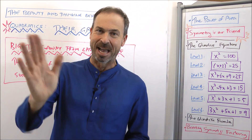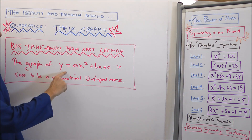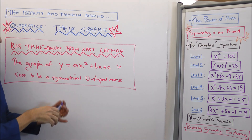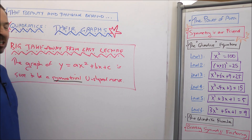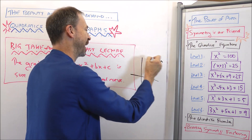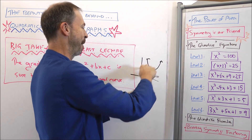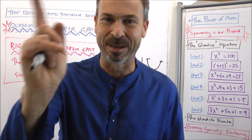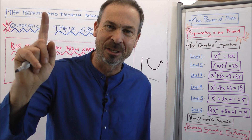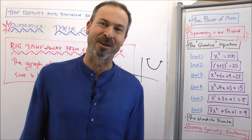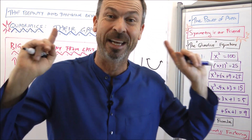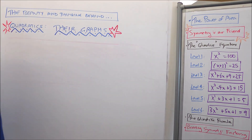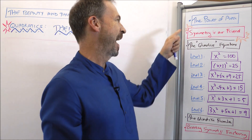Here's the big takeaway from the last lecture: the graph of y equals any quadratic expression ax squared plus bx plus c is sure to be a symmetrical U-shaped graph somewhere on the plane. It might have a different steepness — it might be steep, or upside down and steep — but it's going to be a symmetrical U-shaped graph. Symmetry is going to allow us to use nothing but common sense to figure out the graphs of some very complicated things. Let's do our very first example.